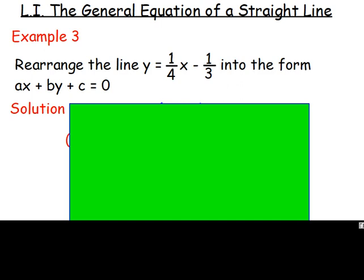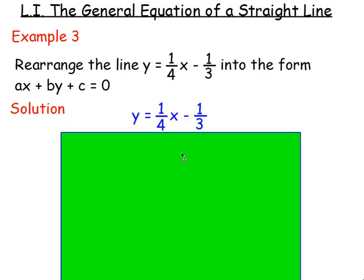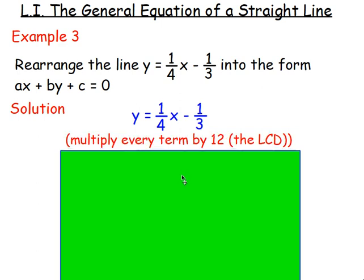The way to do this: start with y equals one quarter x take away one third, and look at your denominators — fourths and thirds. Think about the lowest common denominator. Four times table: 4, 8, 12, 16... Three times table: 3, 6, 9, 12... The smallest number in both is 12 — so the lowest common denominator is 12. Multiply every single term — the y, the quarter x, and the negative one third — by 12.